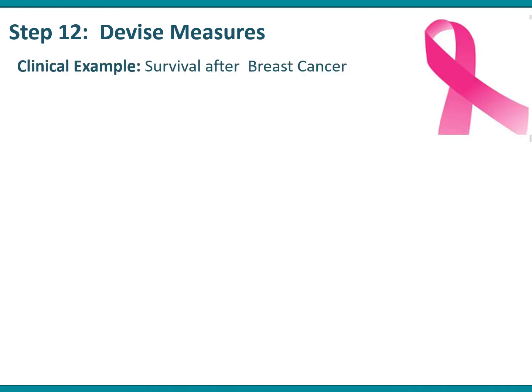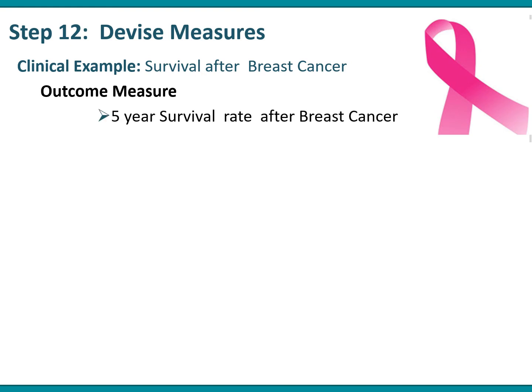I'm going to give a couple of examples of these family of measures. The first example is through survival after breast cancer. An outcome measure typically used in this situation is the five-year survival rate after breast cancer, but obviously you've got to follow a cohort of patients for five years to see the outcome of this measure.